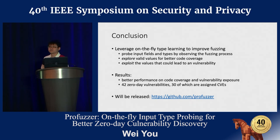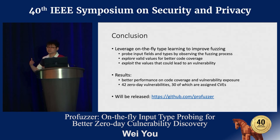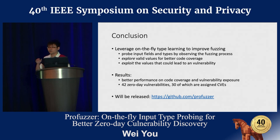The improvement comes from two aspects. First, we eliminate unnecessary fuzzing mutations on bytes whose mutation is ineffective, such as raw data or assertion, because any mutations on these bytes do not help improve coverage. The second aspect is focusing mutation effort on valid values — for example, for enumeration fields, we only mutate with valid values that make the program move forward, not invalid values that cause immediate termination.